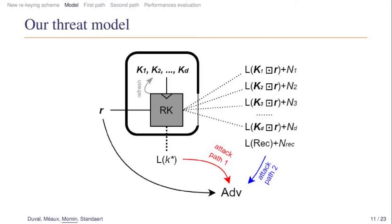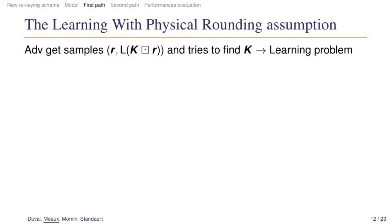Next, we will detail our analysis for each of the two possible attack paths. First we consider attack path one. In this case the adversary gets samples of the shape r and the leakage on k times r, and it tries to find the permanent key k. So it corresponds to a learning problem which is very similar to the learning with errors problem or the learning with rounding problem. And since in this case the rounding function is given by a physical leakage, we will call it the learning with physical rounding problem. As for the other similar assumptions, we can define a distribution for this problem, and here we will study when it will be an easy or hard problem. Because when this problem will be hard, it will be impossible for the adversary to recover the key using attack path one.